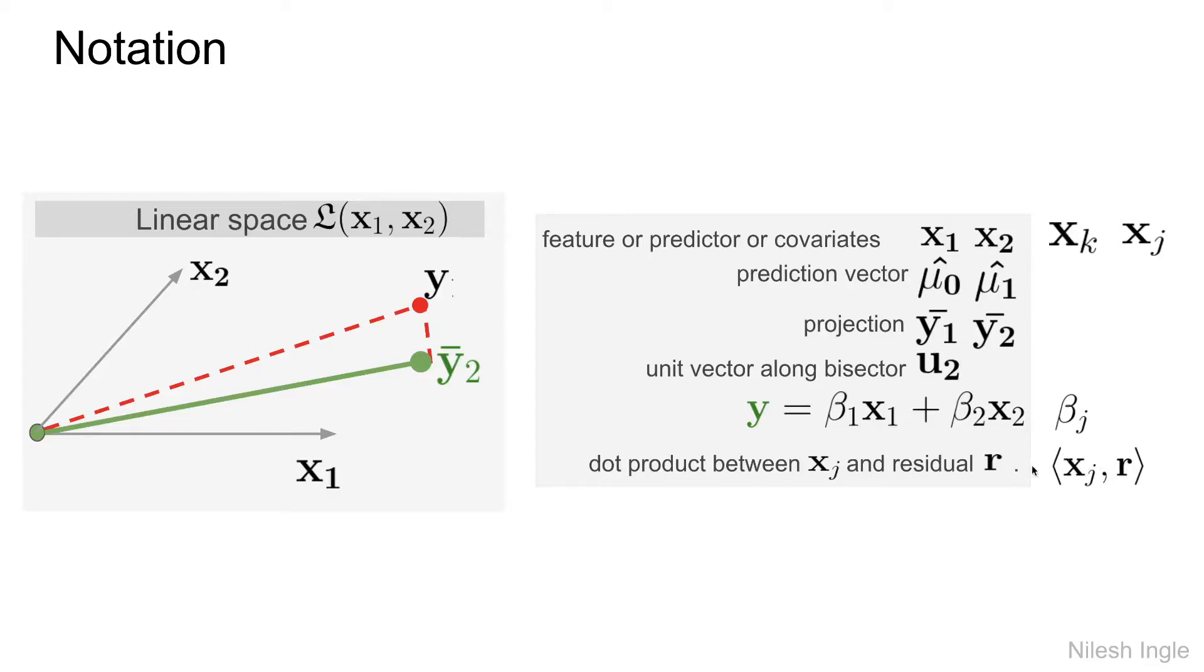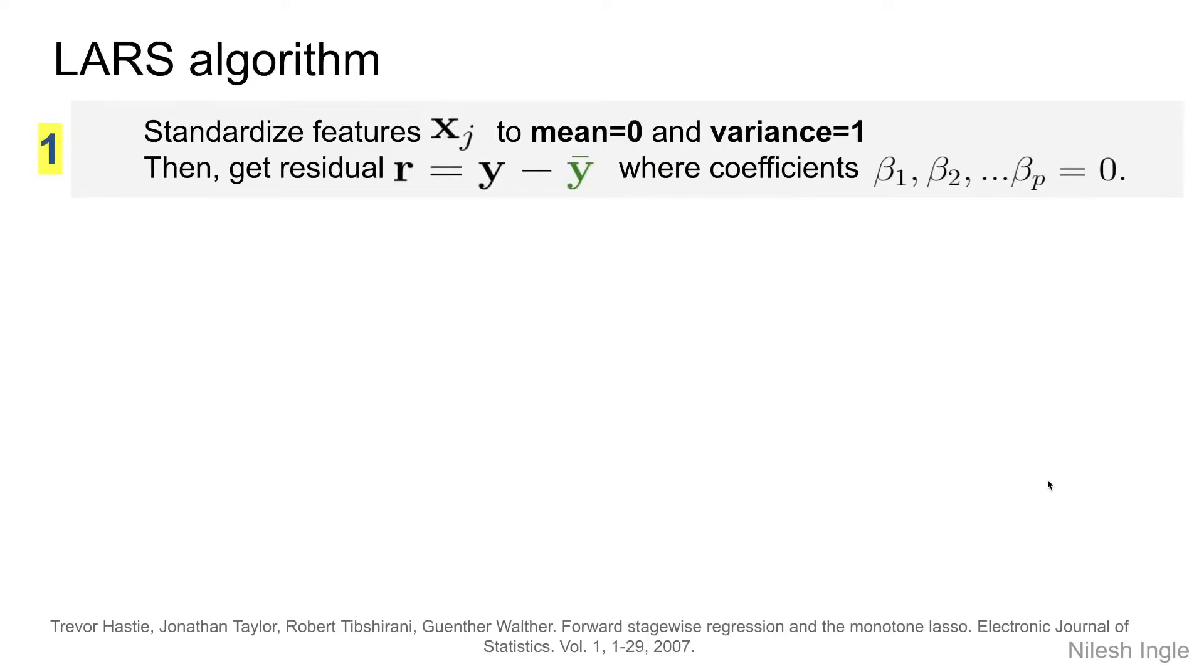Let's look at the algorithm. The very first step is to standardize all the features so that they have a mean of zero and variance of one. Here, the features are denoted by xj, so it could be x1, x2, x3, and so on. At the same time, we want to get the very first residual, which would be just the intercept, as all the coefficients or all the features are set to zero.